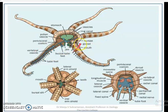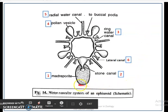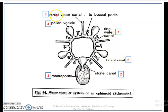This is a diagrammatic picture of the water vascular system in Ophiuroid, shown here in blue. The main components of the water vascular system are the Madreporite, Stone Canal, Ring Canal, Lateral Canal, Radial Canal, and Polian Vesicle.